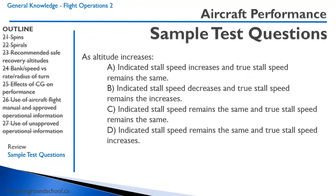As altitude increases: A indicated airspeed increases, true stall speed remains same — incorrect; B indicated stall speed decreases, true stall speed increases — incorrect, indicated stall speed doesn't decrease; C both remain the same — incorrect; D indicated stall speed remains the same and true stall speed increases — correct. The air is less dense so true stall speed increases, but less dense air also enters the airspeed indicator, and the two effects cancel out, keeping indicated stall speed constant. Answer: D.